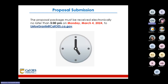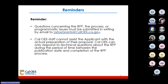The proposal package must be received electronically no later than 5 p.m. on Monday, March 4, 2024, to listosgrants@caloes.ca.gov. Questions concerning the RFP, the process, or programmatic issues must be submitted in writing by email to that address. CalOES staff cannot assist with the actual preparation of proposals — CalOES can only respond to technical questions about the RFP between the publication date and the completion of the RFP process.